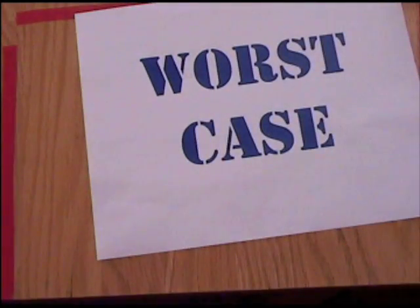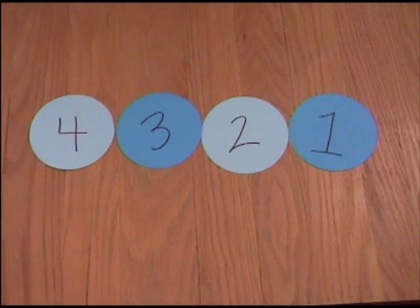The worst case scenario for the bubble sort is order n squared. That means in our example of four numbers, it must check 16 times to compare each individual number.